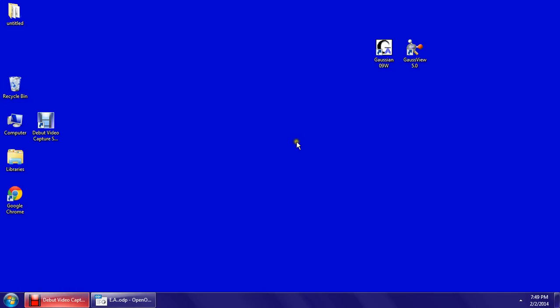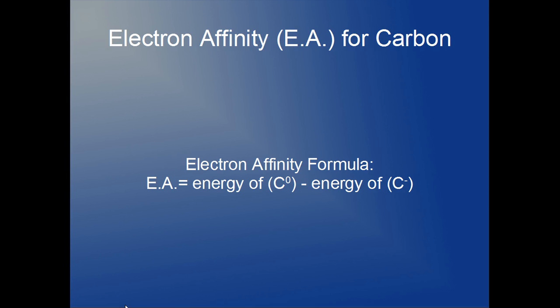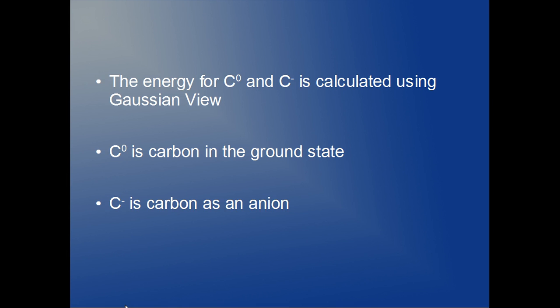Today, we're going to calculate the electron affinity of carbon. The electron affinity of carbon is found by subtracting the energy of carbon as an anion from the energy of carbon in the ground state. In order to calculate these energies for carbon in the ground state and carbon as an anion, we're going to use Gaussian View.